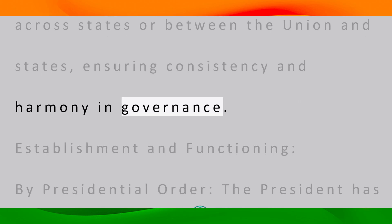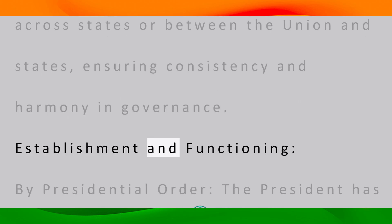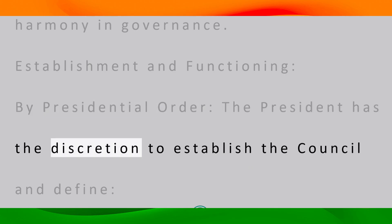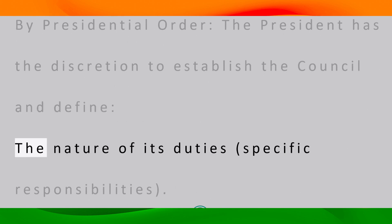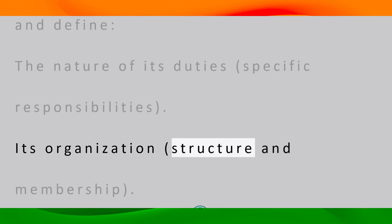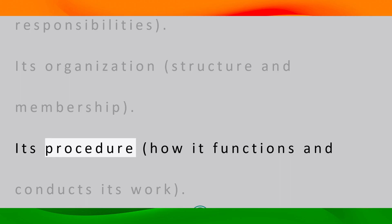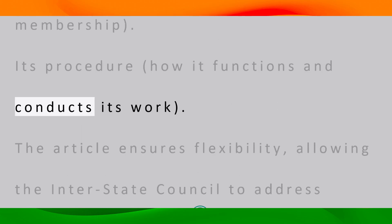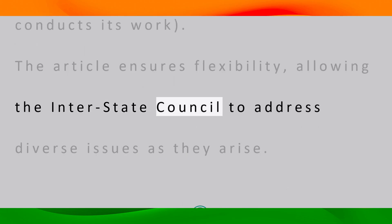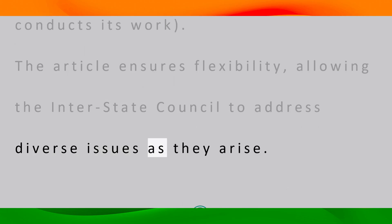The council can recommend measures for better coordination of policies and actions across states or between the union and states, ensuring consistency and harmony in governance. Established by presidential order, the president has the discretion to define the nature of its duties, specific responsibilities, organization structure, membership, and procedure. The article ensures flexibility, allowing the Interstate Council to address diverse issues as they arise.